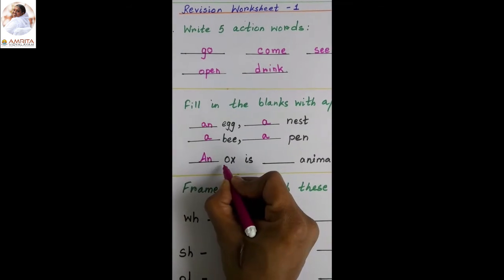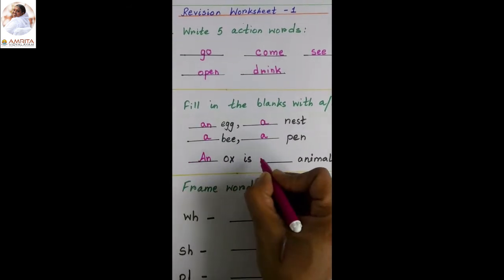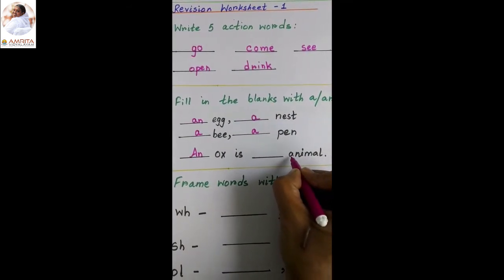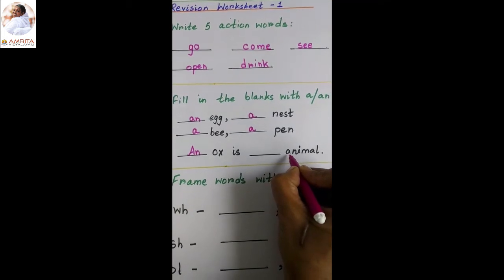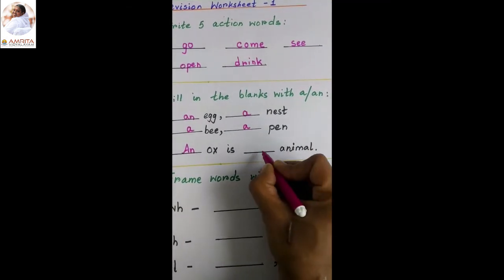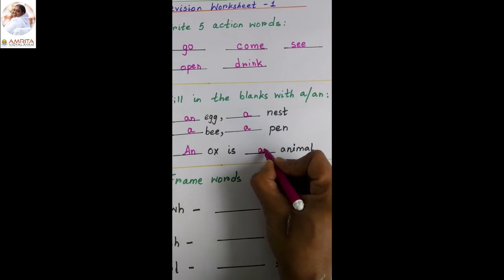Dash ox. A-N, an ox, because it is starting with vowel O. Dash animal. Animal starts with letter A that is vowel. So an animal.